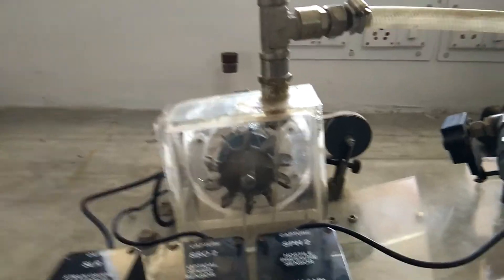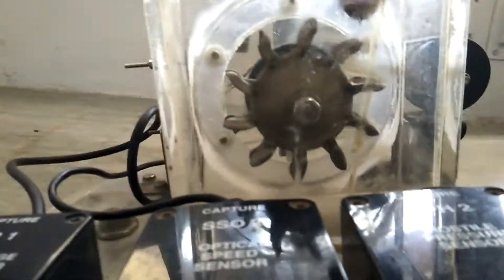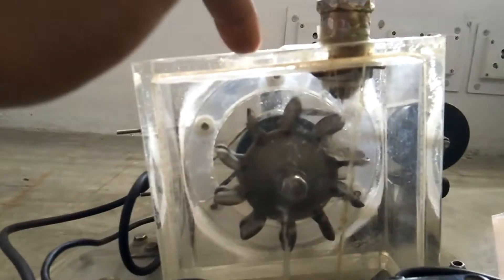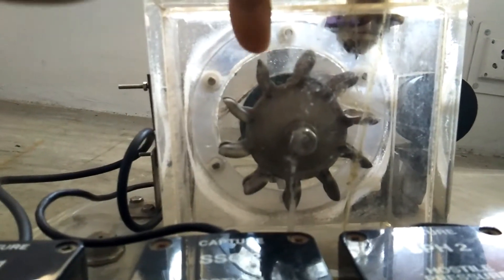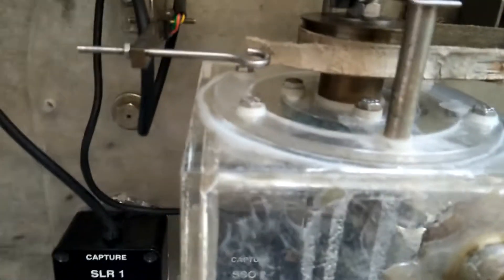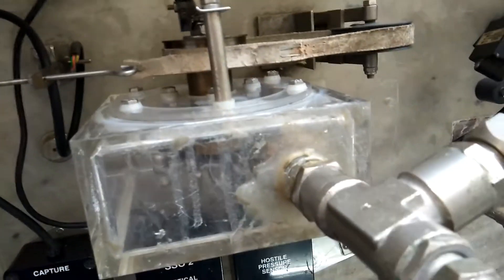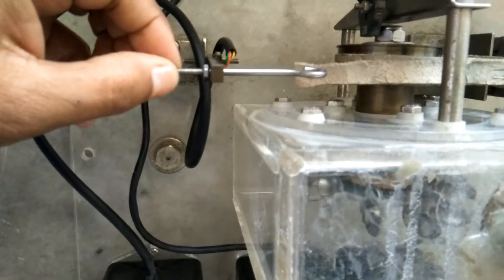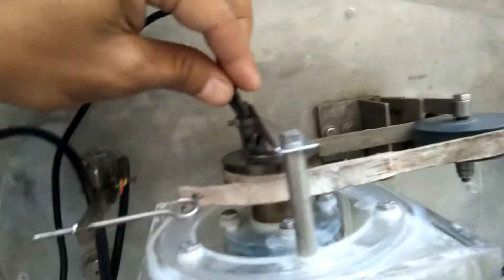Here this is the blade, this is the turbine. If you see the back side, you can find the arrangement. This is your strain gauge, rotational speed sensor, another strain gauge, and this is your differential pressure sensor.